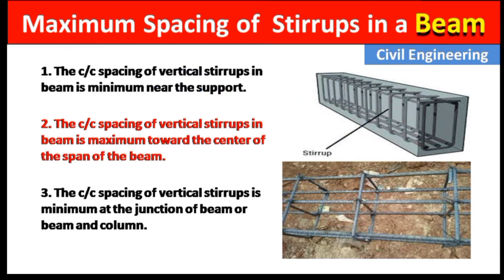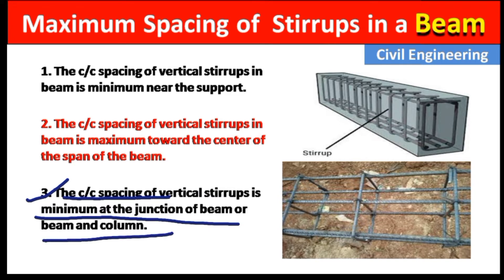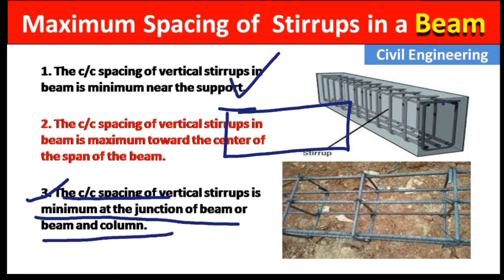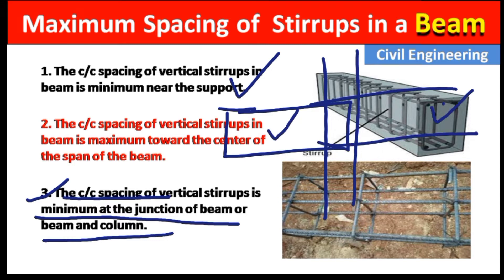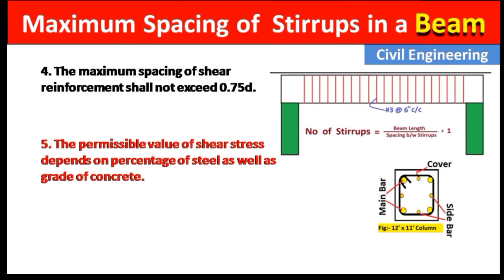Point three: the center-to-center spacing of vertical stirrups is minimum at the junction of a beam and column. When there is a junction where a beam meets a column, we have to provide stirrups at a lower spacing at that point.